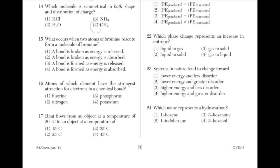What occurs when two atoms of bromine react to form a molecule of bromine? You can use the acronym BARF to remember that as a bond is broken, energy is absorbed, and as a bond is formed, energy is released. This eliminates answer choices 1 and 4. If two elements of bromine combine to form a bromine compound, then a bond is formed and energy is released. Answer choice 3.